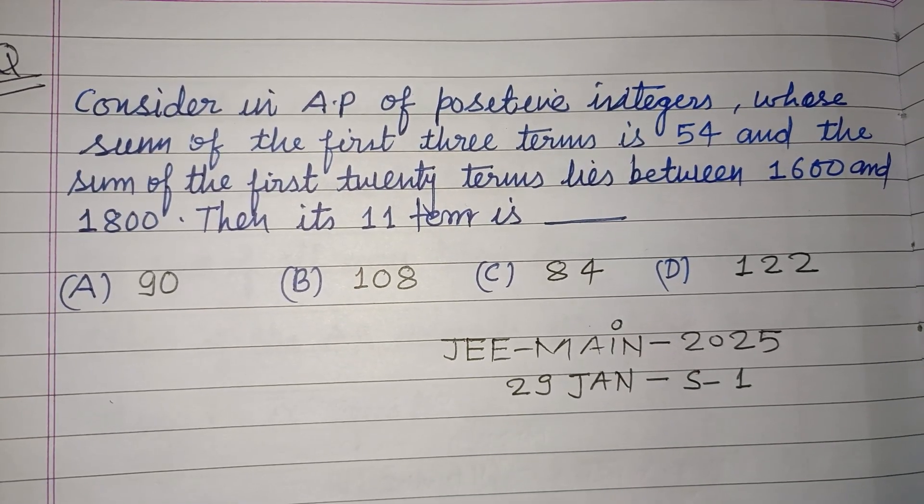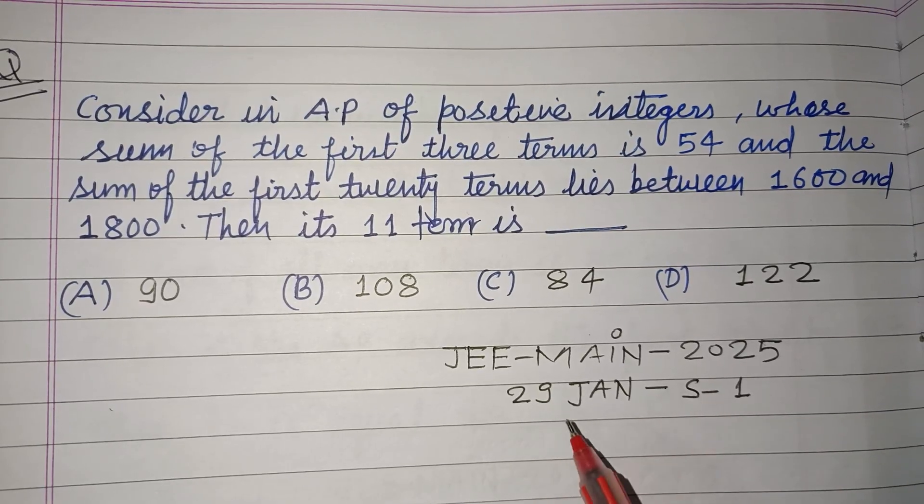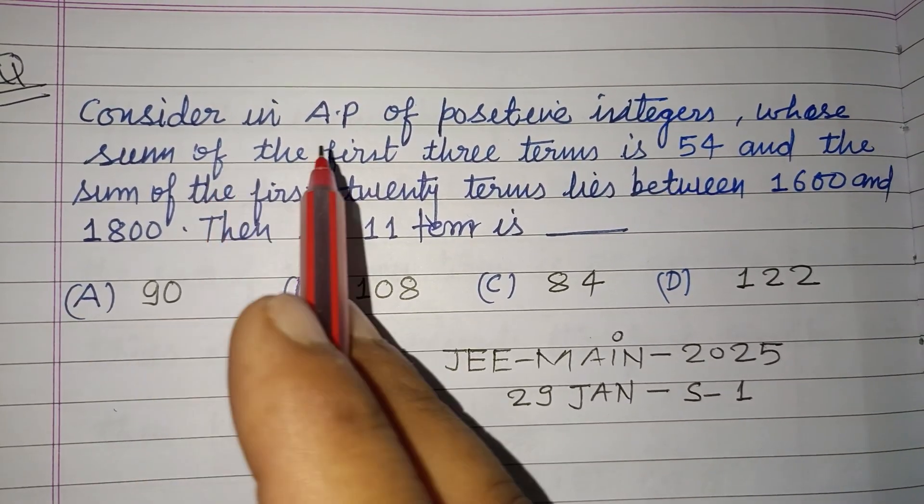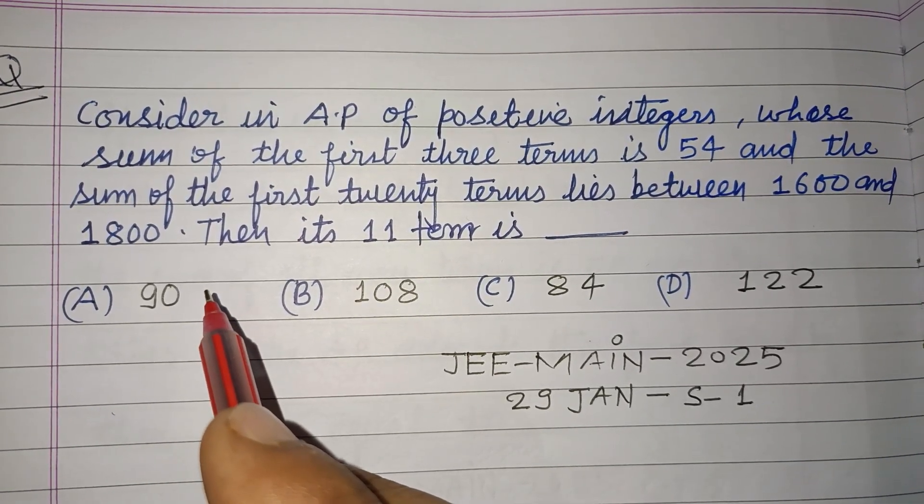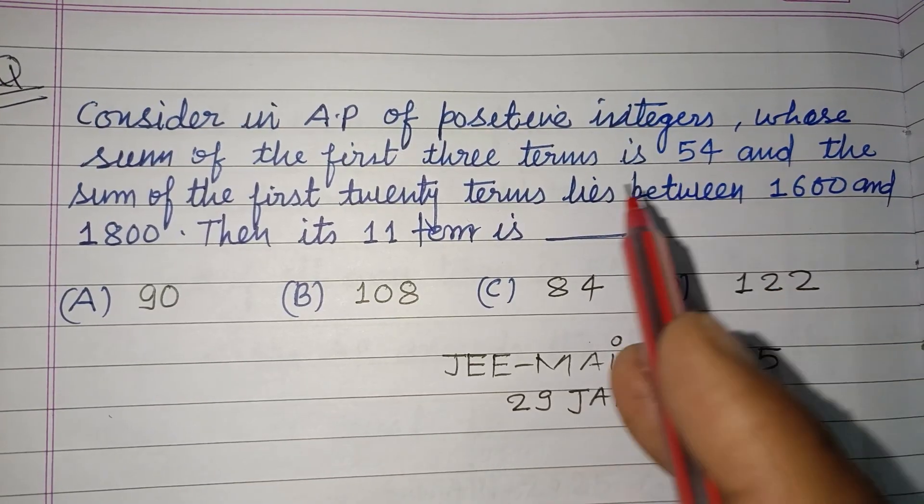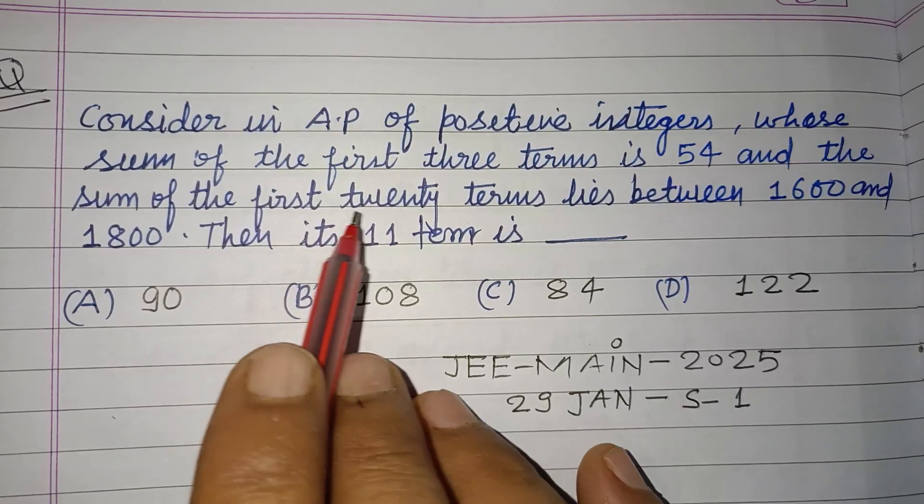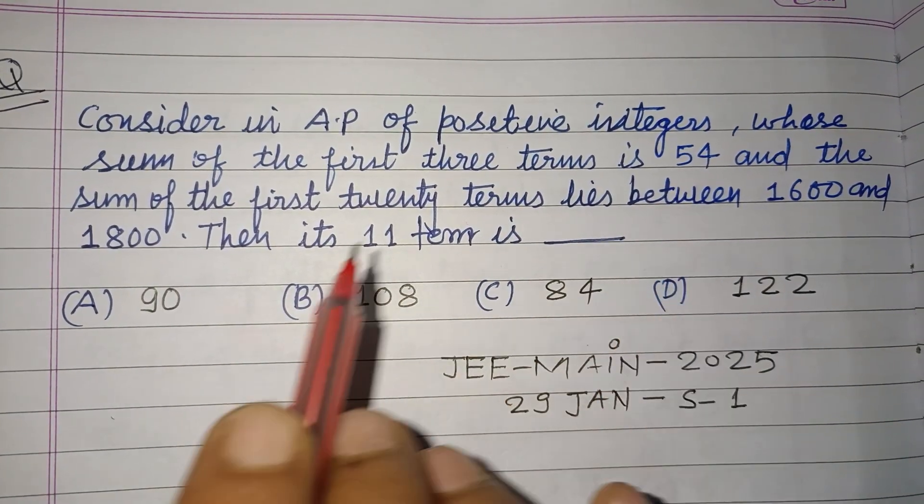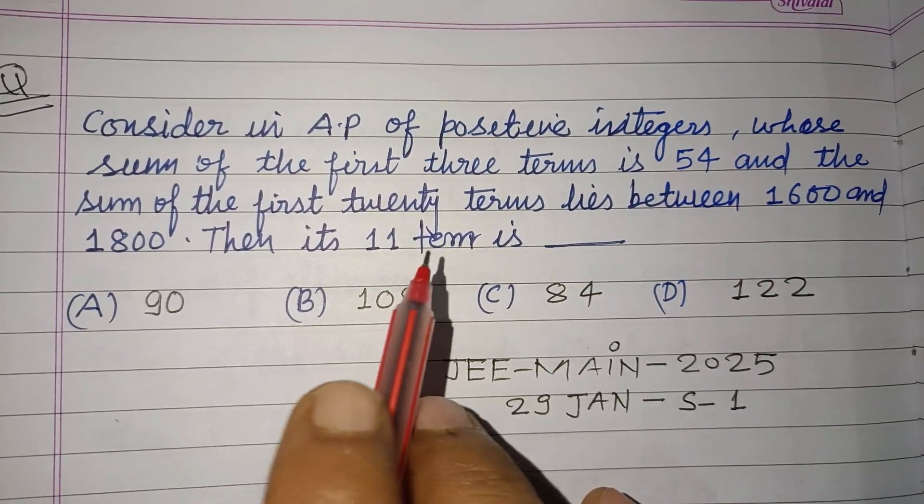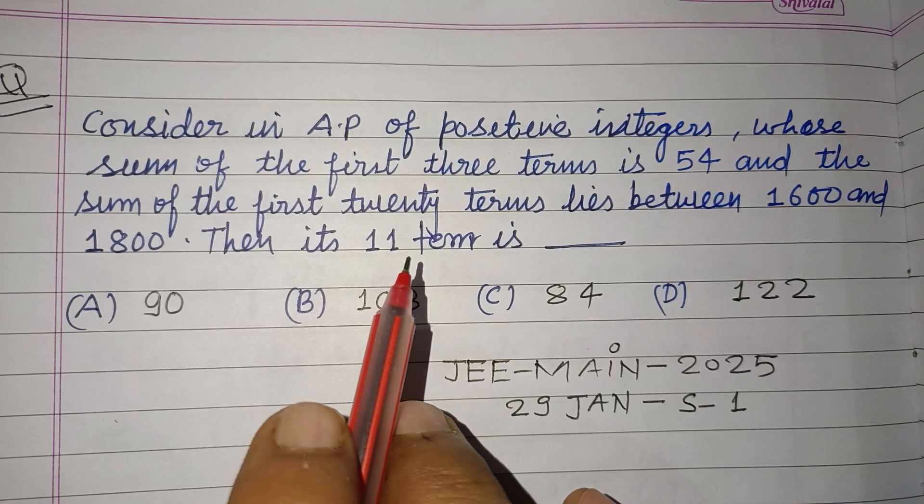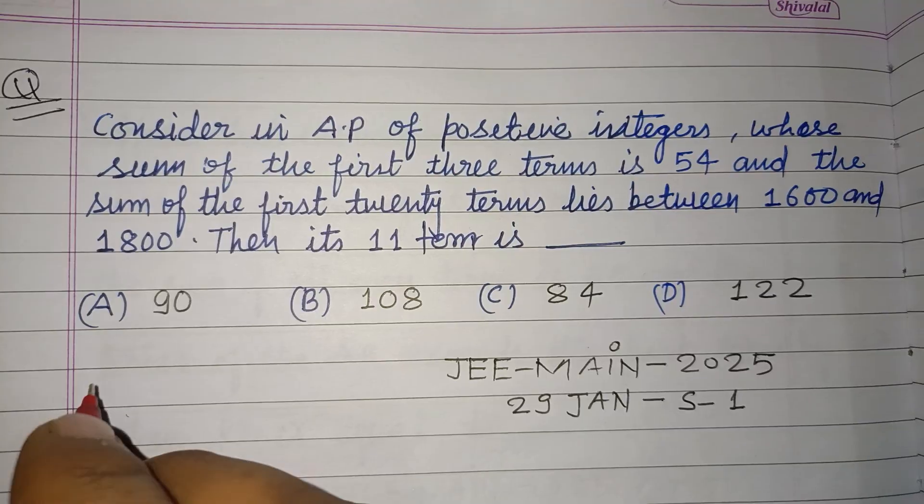Hello viewers, warm welcome to this YouTube channel. Question from JEE Main 2025, 29 January shift 1st. Consider an AP of positive integers whose sum of the first three terms is 54 and the sum of the first 20 terms lies between 1600 and 1800. Then its 11th term is.